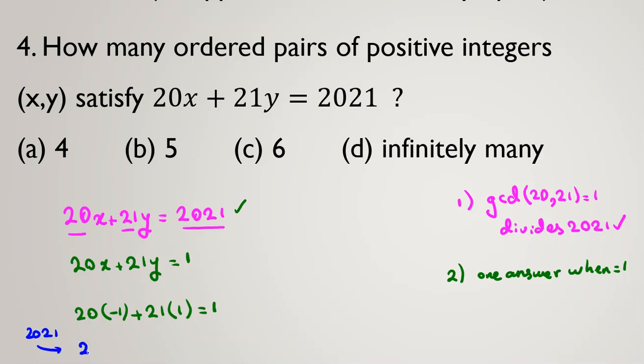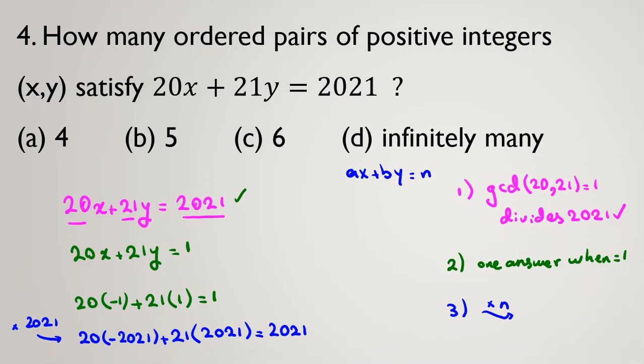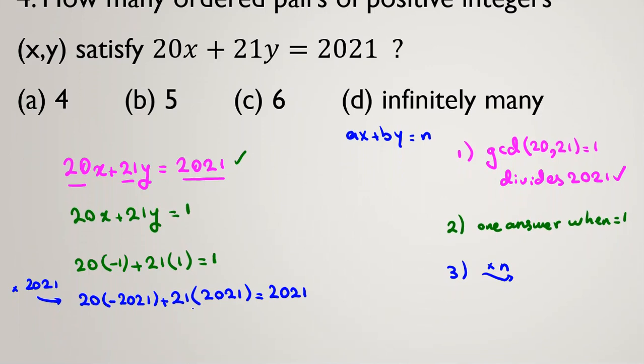We multiply both sides by 2021. So it will be 20 times, we multiply this by 2021. It will be negative 2021 plus 21 times 2021 is this, equal to 2021. So in third step, we multiply by, for example, if it is AX plus BY equal to N, we multiply by N. And we've multiplied here. Now we found one answer. One more step is left. We found that AX0 plus BY0 equal to N, one answer, like here. That we found negative 2021 and 2021.